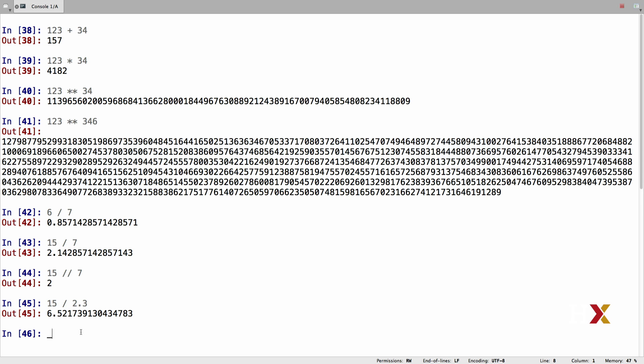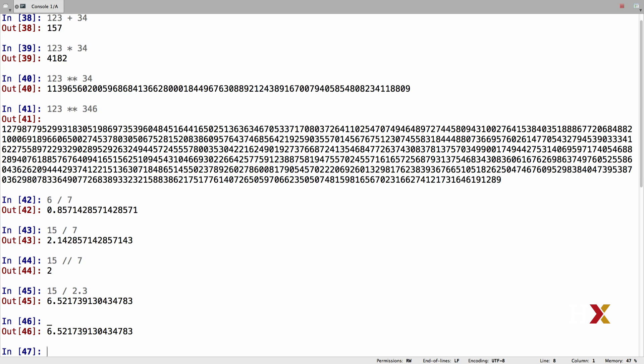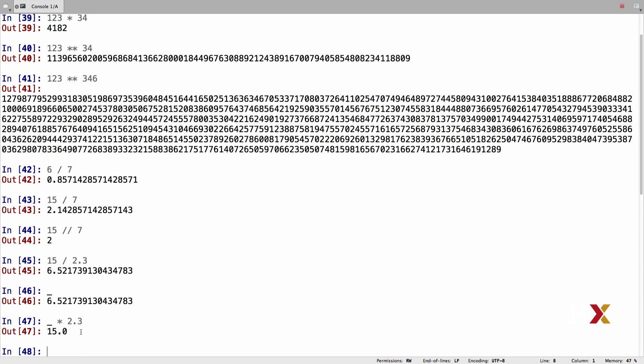Python tells us that it's 6.521 and so on. Now if I hit underscore, Python is returning the value of the latest operation. Say I wanted to multiply this number with 2.3, which would give me back the number 15. So I can do that in the following way. I just take the underscore, I multiply that by 2.3, and the answer is 15.